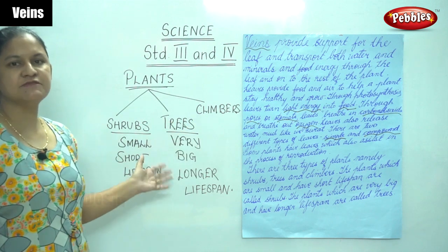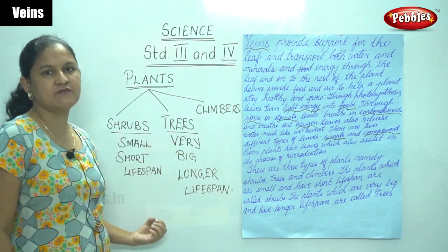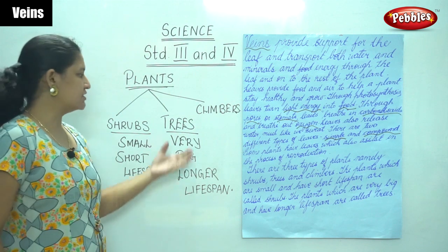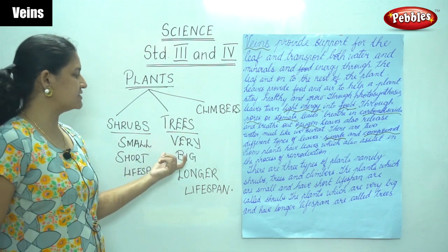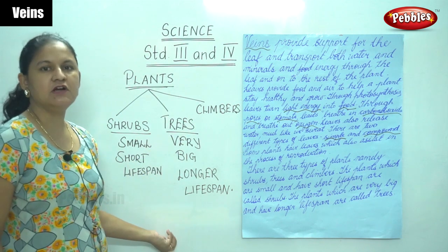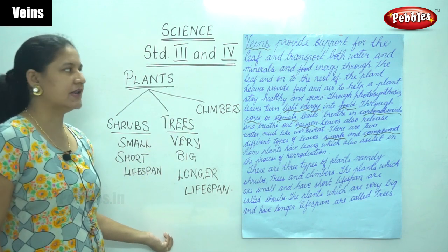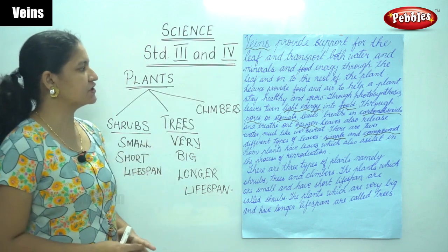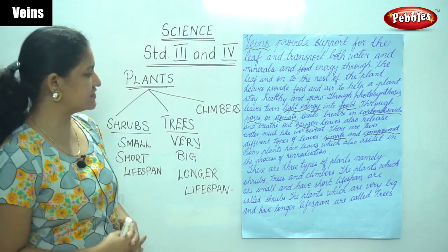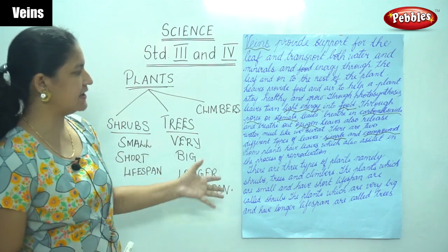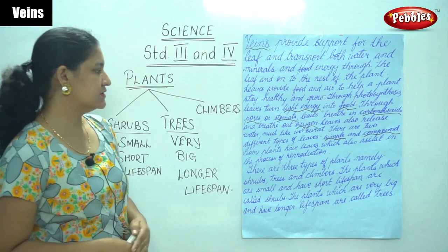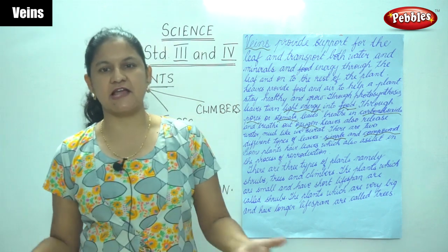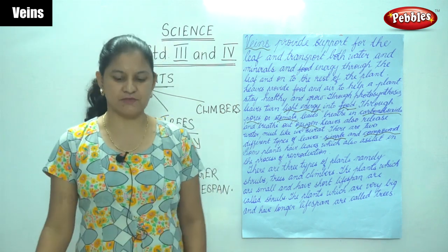Shrubs are plants that are small and have a short life span, and trees are plants that are very big and have a longer life span. So these are the functions of the leaves and veins, and the three types of plants are shrubs, trees, and climbers.